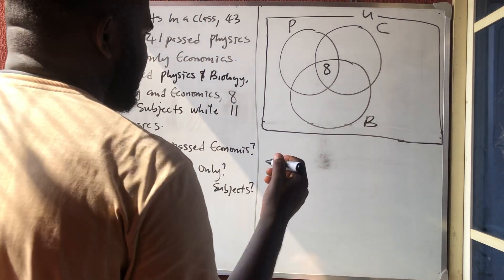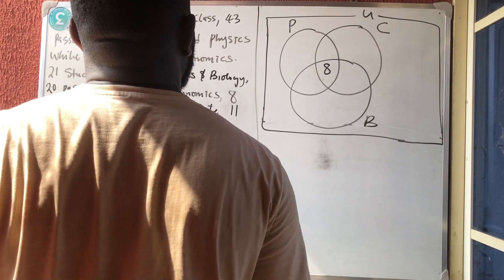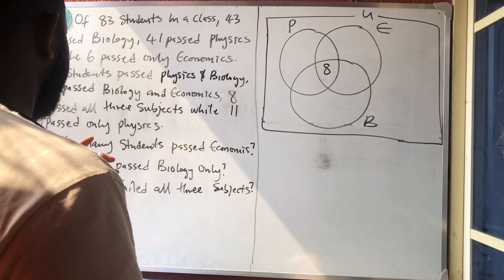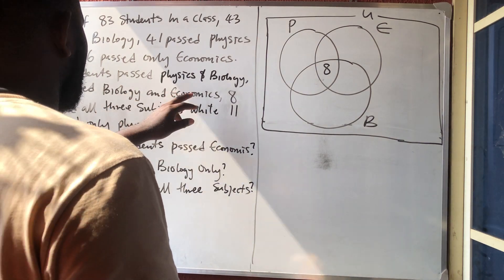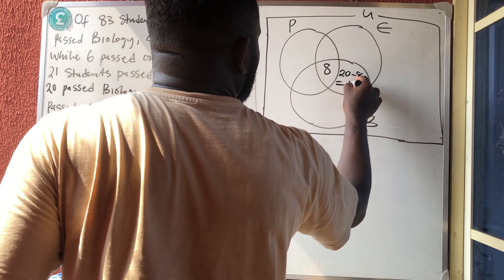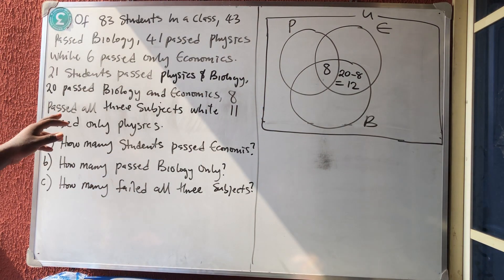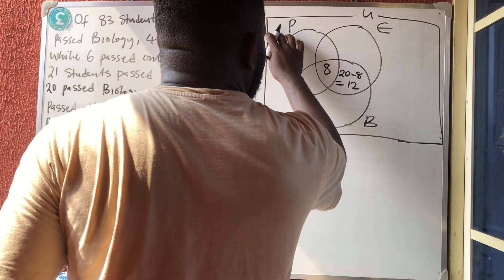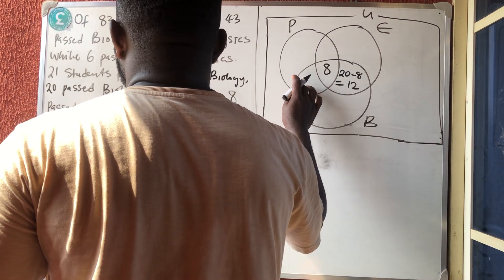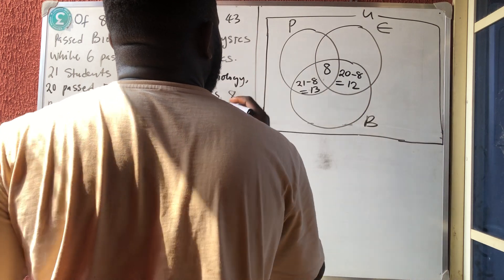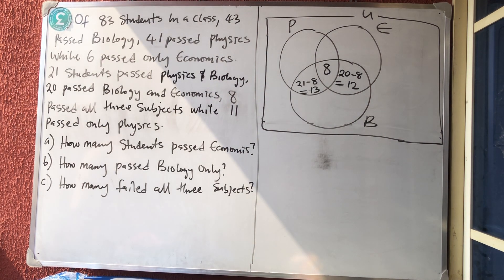For Biology and Economics — they didn't put 'only', so it includes the center. That gives us 20 minus 8, which equals 12 here. For Physics and Biology — also no 'only' — so 21 minus 8 equals 13 in that intersection region.